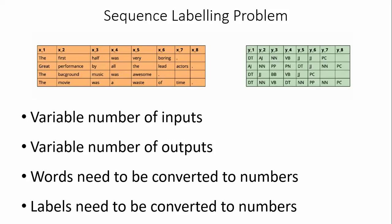So how are we going to perform a sequence labeling problem using the Recurrent Neural Network Algorithm? First, we clearly understand what is the variable number of inputs, variable number of outputs, how we are converting the words into numbers, and how labels need to be converted into numbers. These are the four important metrics when considering the Recurrent Neural Network Algorithm.